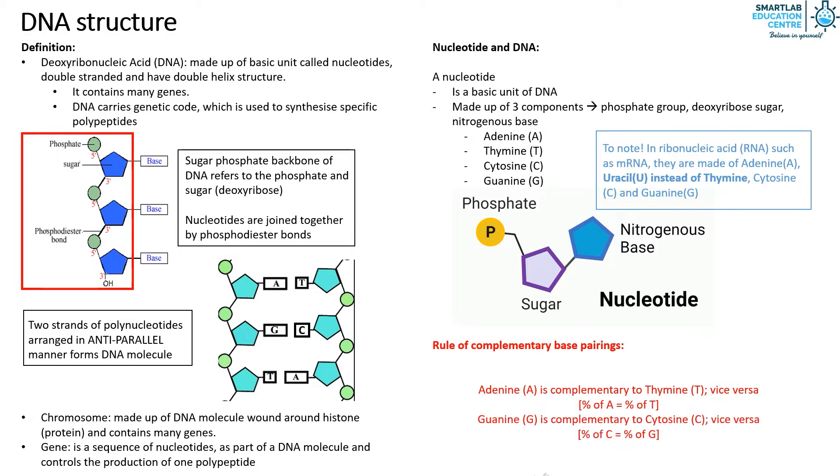In simple terms, A and T will always pair up, C and G will always pair up. Therefore, the ratio of A to T and C to G in an organism is always 1 to 1.